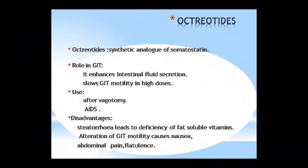Next is octreotide, which is a synthetic analog of somatostatin. Its role in GIT is that it decreases intestinal fluid secretion and slows down motility at high doses. It is generally used after vagotomy and is also used in AIDS-related diarrhea. The disadvantage is that it causes steatorrhea — fat in stool — which leads to deficiency of fat-soluble vitamins in the body.